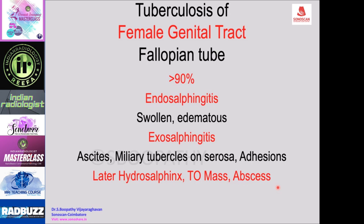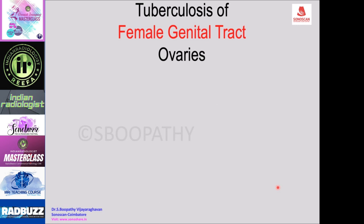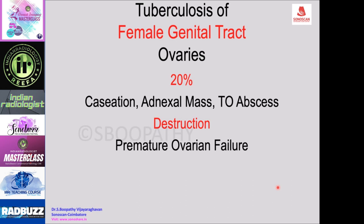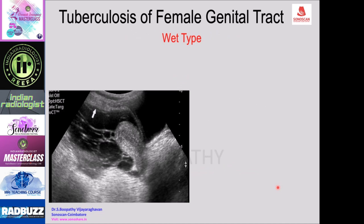Later, with fibrosis, tuberculosis of the fallopian tube may result in hydrosalpinx, tubo-ovarian mass, or tubo-ovarian abscess, and ultimately infertility. Tuberculosis of the ovaries occurs in less than 20% of cases, with pathology including caseation, adnexal mass, and tubo-ovarian abscess. Destruction of entire ovarian tissue can result in premature ovarian failure leading to premature menopause or infertility.